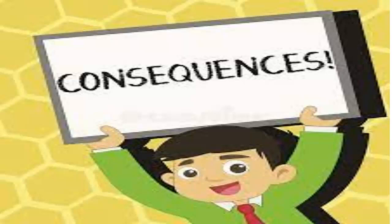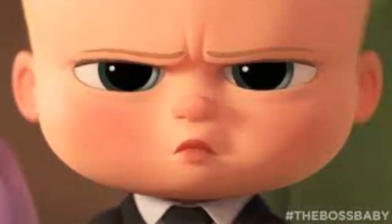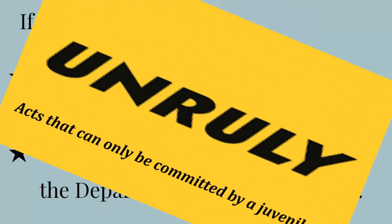The worse the crime, the worse the consequence. If the crime is serious enough, the juvenile can be charged as an adult. If the child is declared delinquent, consequences include probation, a 30-day short-term sentence, or, if needed, committing the child to the Department of Juvenile Justice.